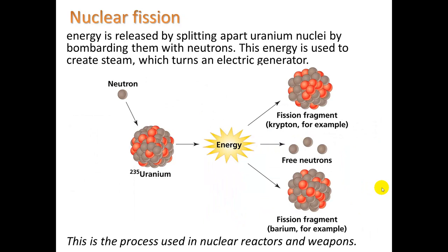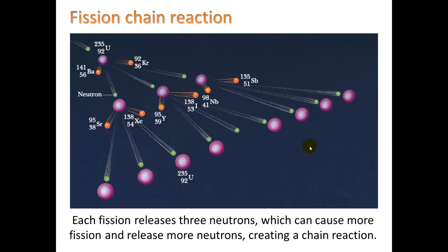How does the fission process work? One neutron comes in and hits a uranium atom, causing it to split — in this case making krypton and barium. It also releases three new neutrons, which can then go off and split more uranium atoms. This forms a fission chain reaction.